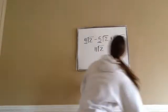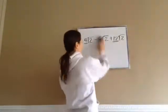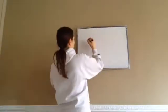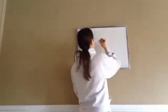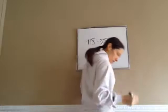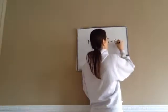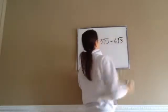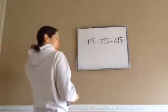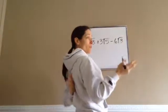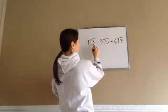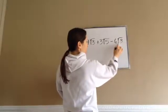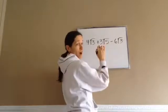You see how we did that? That's how you're going to be doing these kind of problems. Now they're going to try to trick you — look at this next one: 4 square root of 3 plus 3 square root of 5 minus 6 square root of 3.